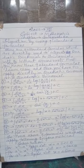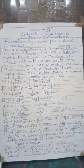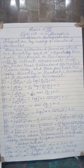Fourth formula: dx upon under root of (x square minus a square) is equal to log of (x plus under root of x square minus a square), plus c. Fifth formula: dx upon under root of (a square minus x square) is sin inverse of x upon a, plus c.